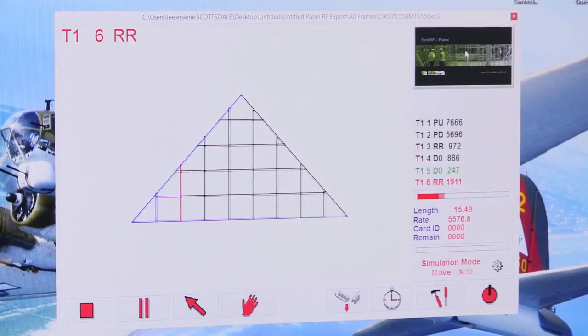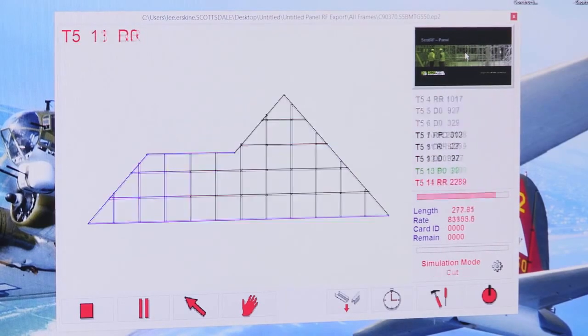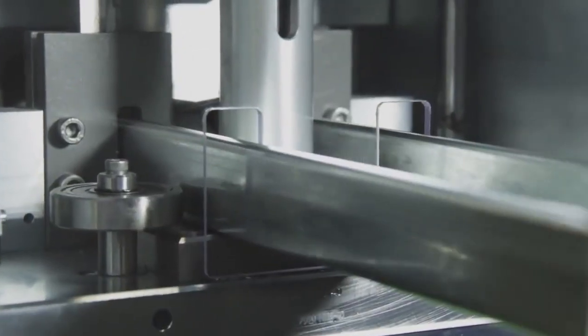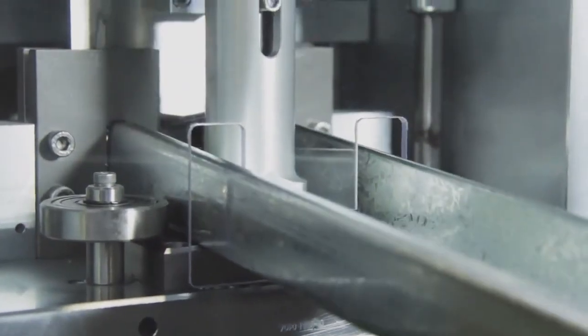Once exported, frames are checked once again, then the CNC controlled rollformer automatically produces all the elements cut to length, punched, notched and swaged.